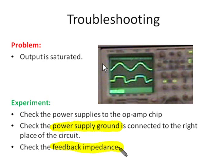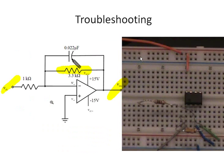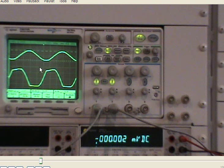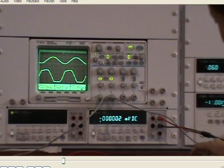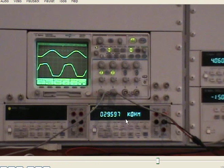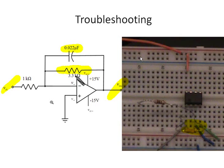If the output is still saturated, we need to make sure the feedback impedance is correct. For example, we need to verify the 3.3 kilohm resistor. The input is correct but the output voltage is still saturated, even after confirming the op amp power is correct. When we measure the feedback resistance, it reads 29 kilohms — much higher than the expected 3.3 kilohms. That's the problem.